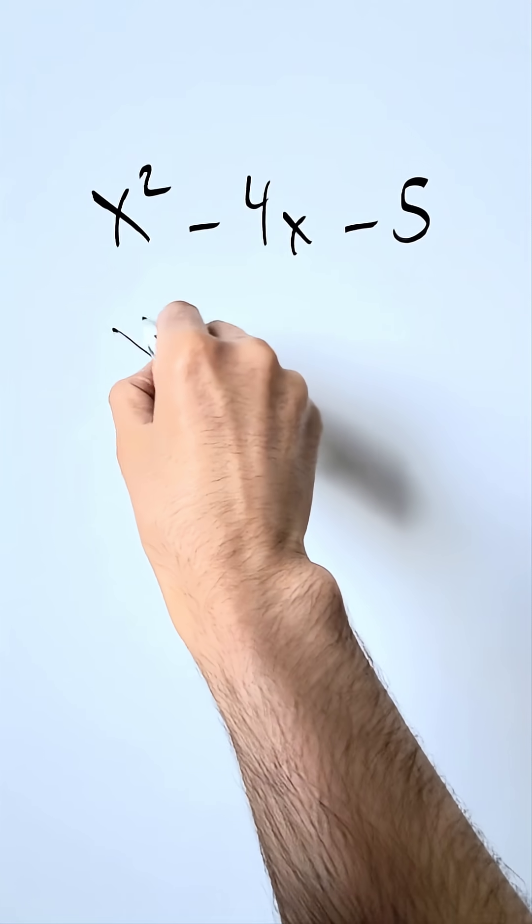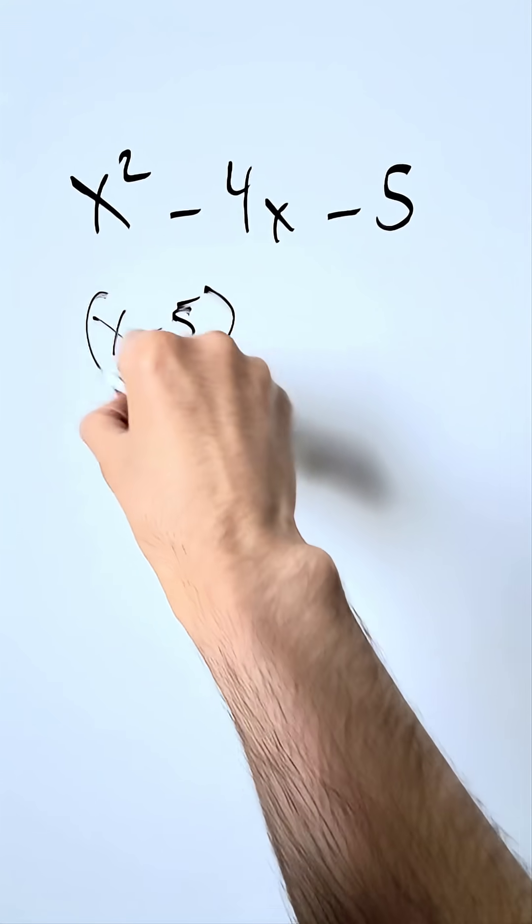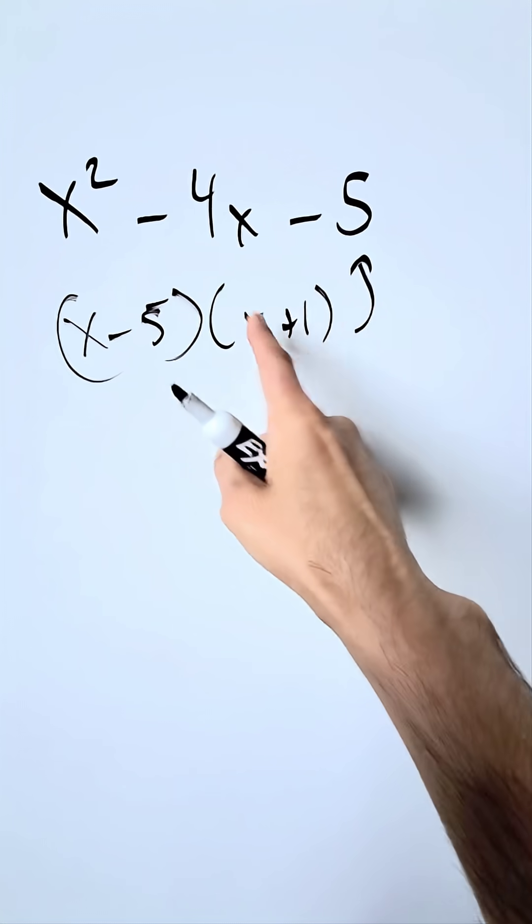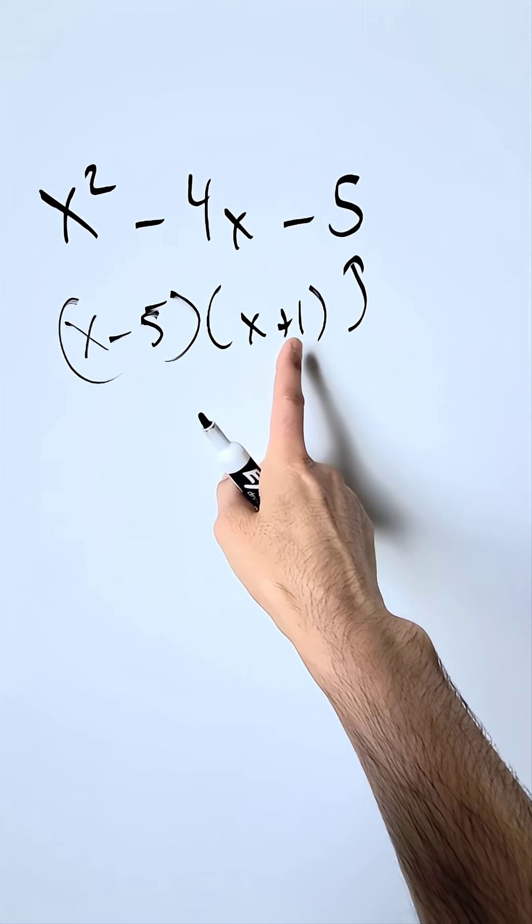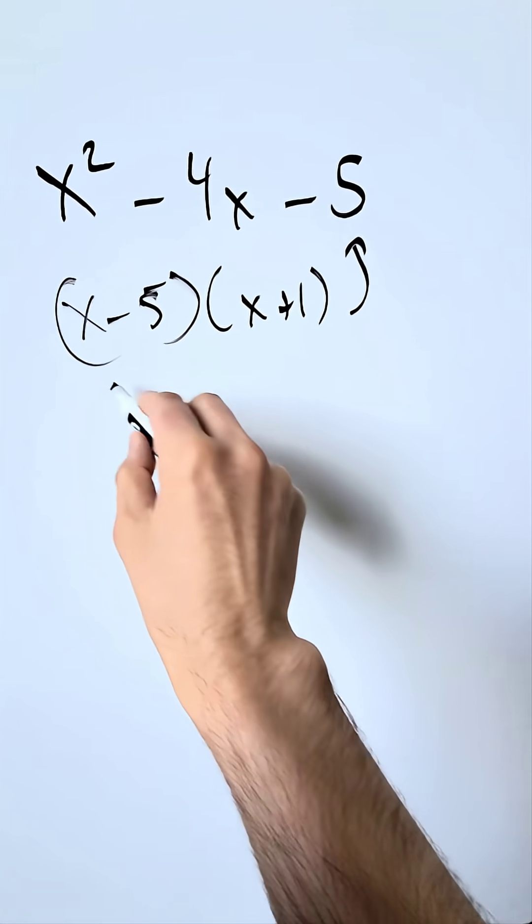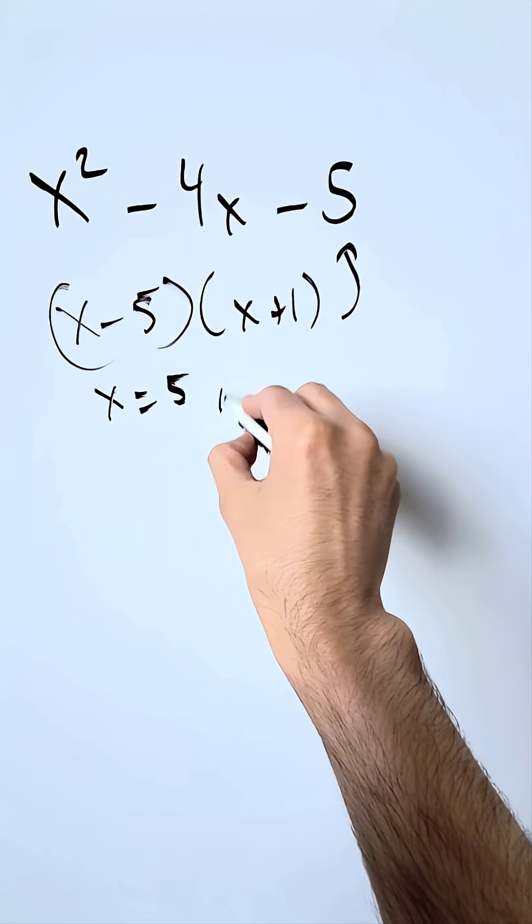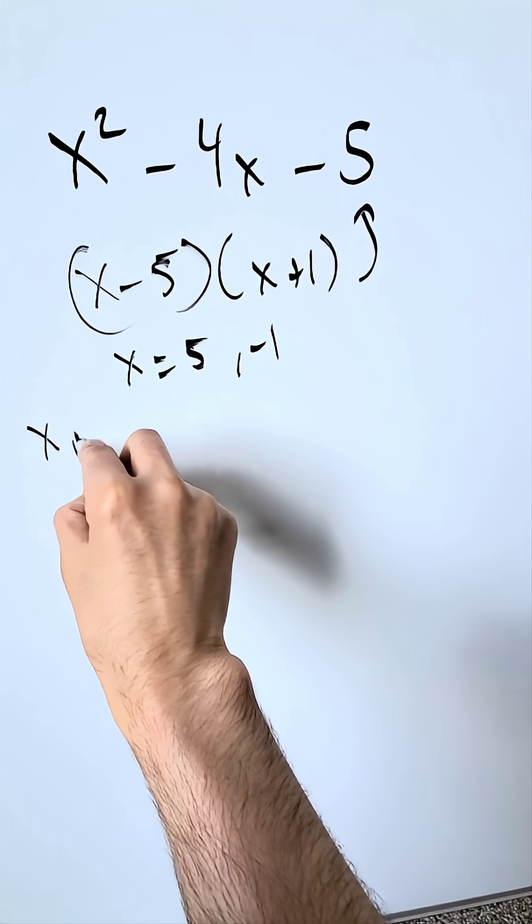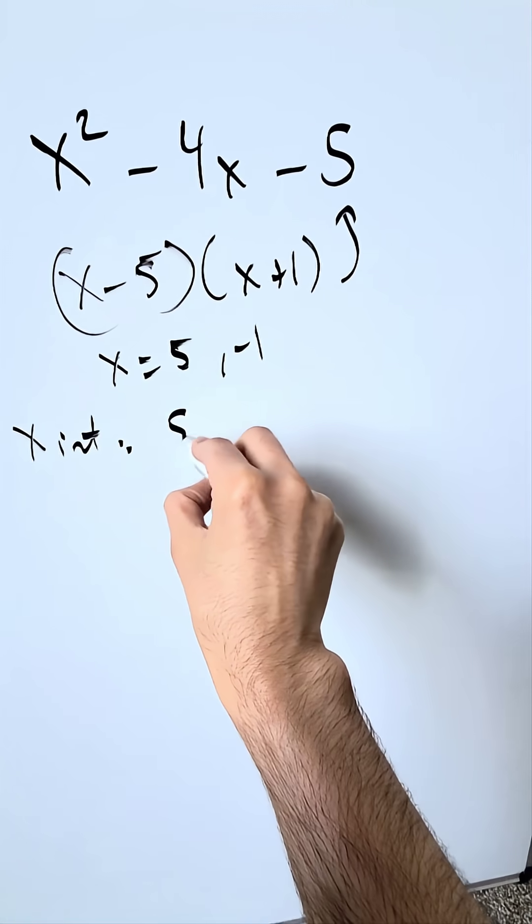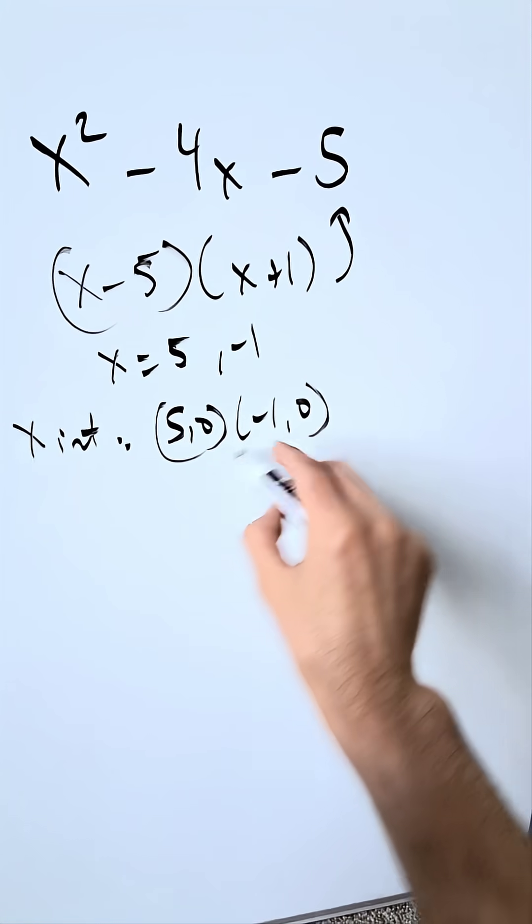When you factor it you're looking at x minus 5 times x plus 1. If you were to take this back it would go back there. You're looking here at appropriate factors for that. x here is equal to 5 comma minus 1. These are your x-intercepts and we can write these as 5 comma 0 and minus 1 comma 0.